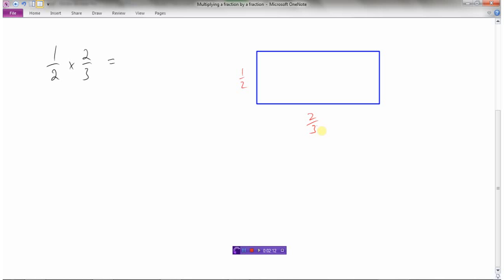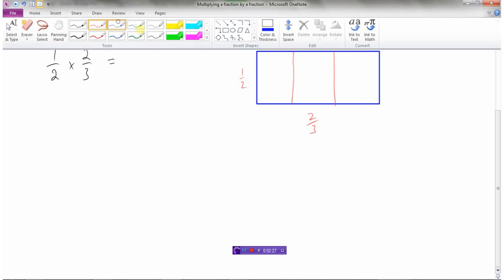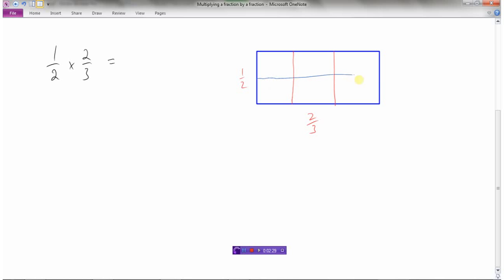So I've got one-half times two-thirds. So on this side I've got to divide things into thirds. I'm going to try to do a better job of making that look a little more equal. So there, I've divided this side into thirds. And on this side I'm going to divide these into halves.